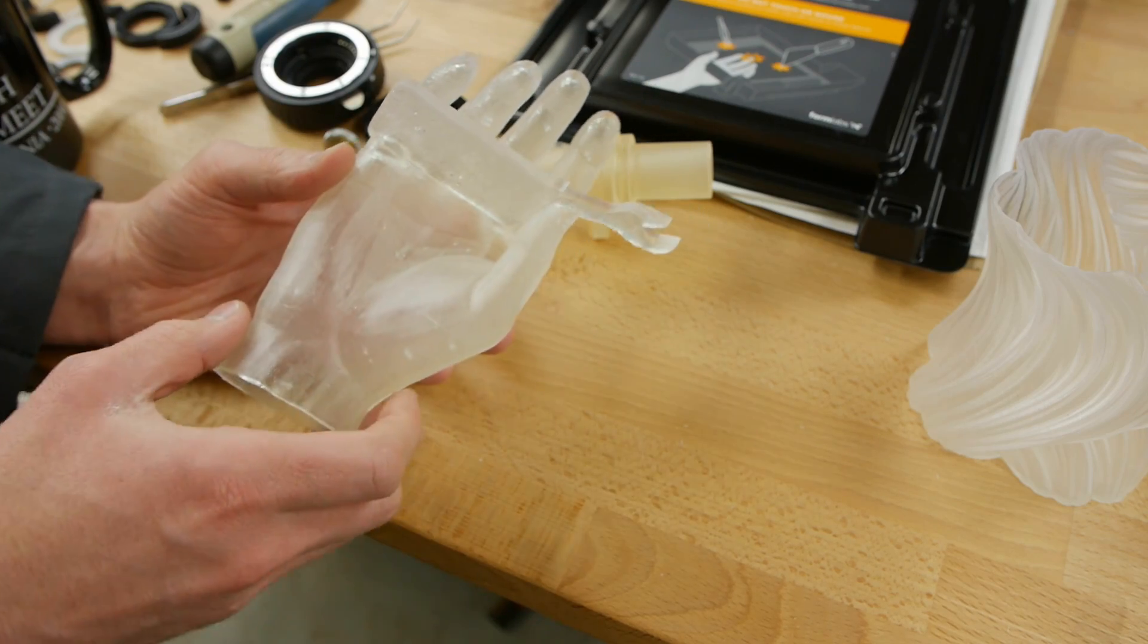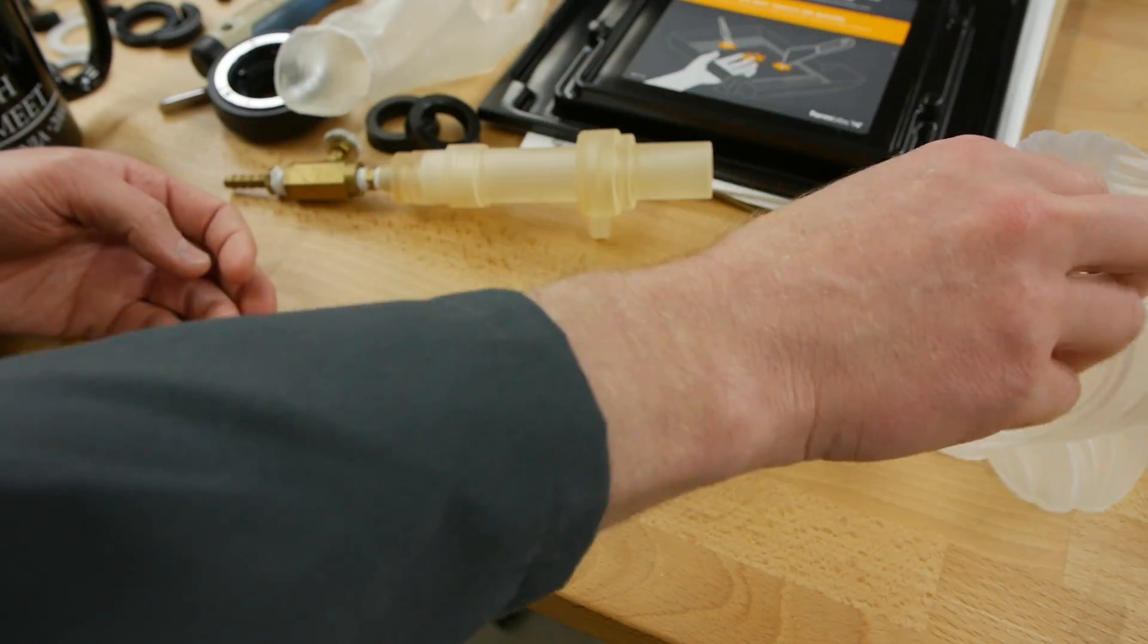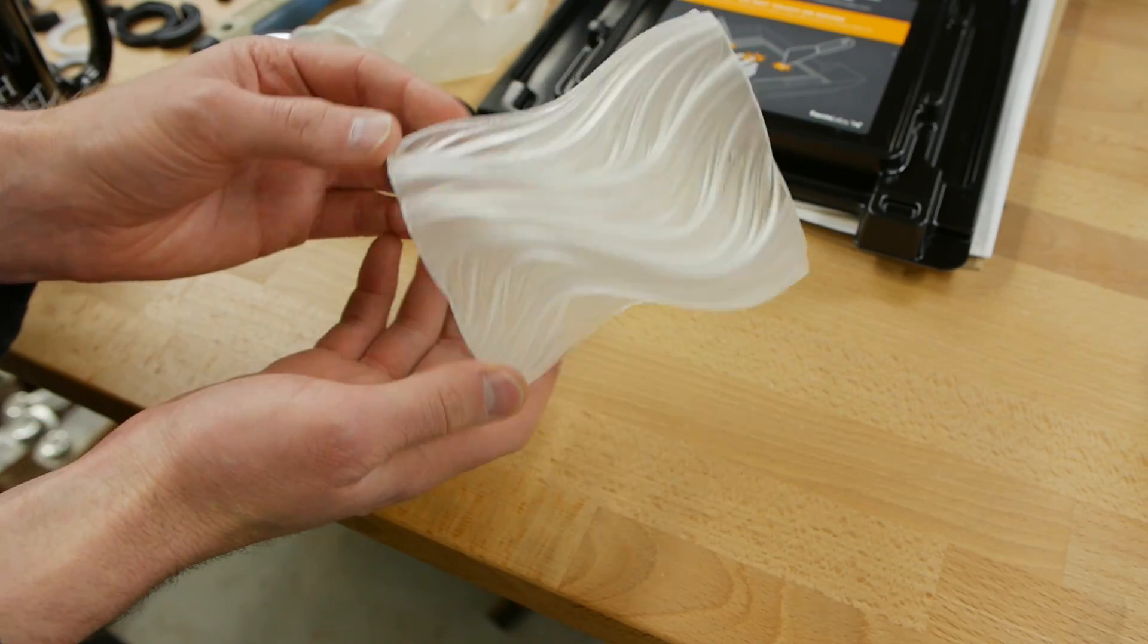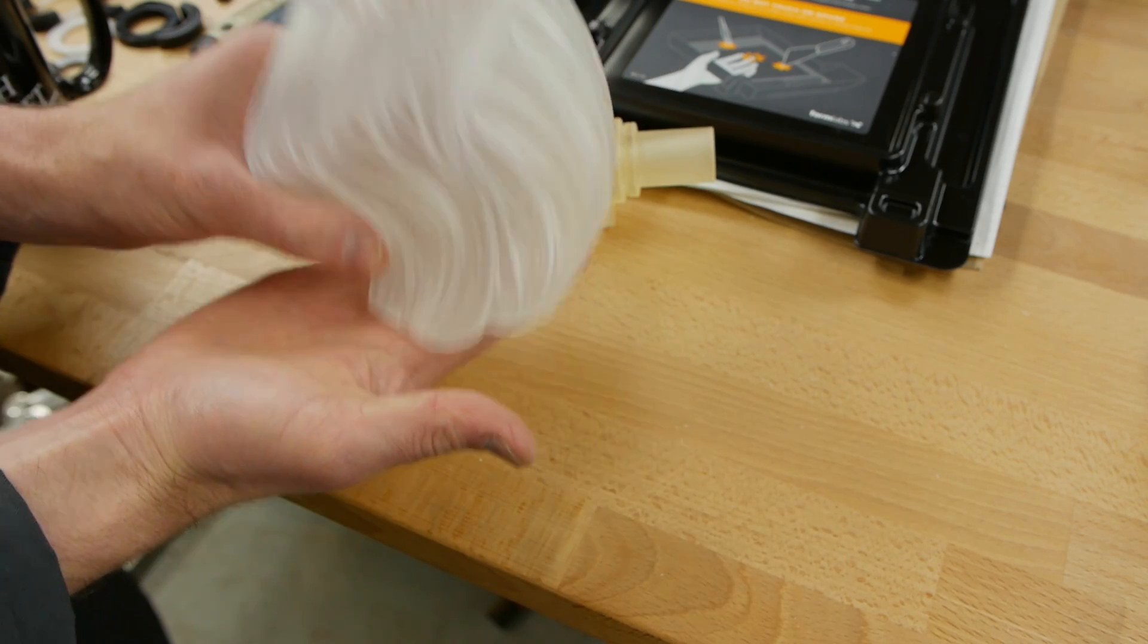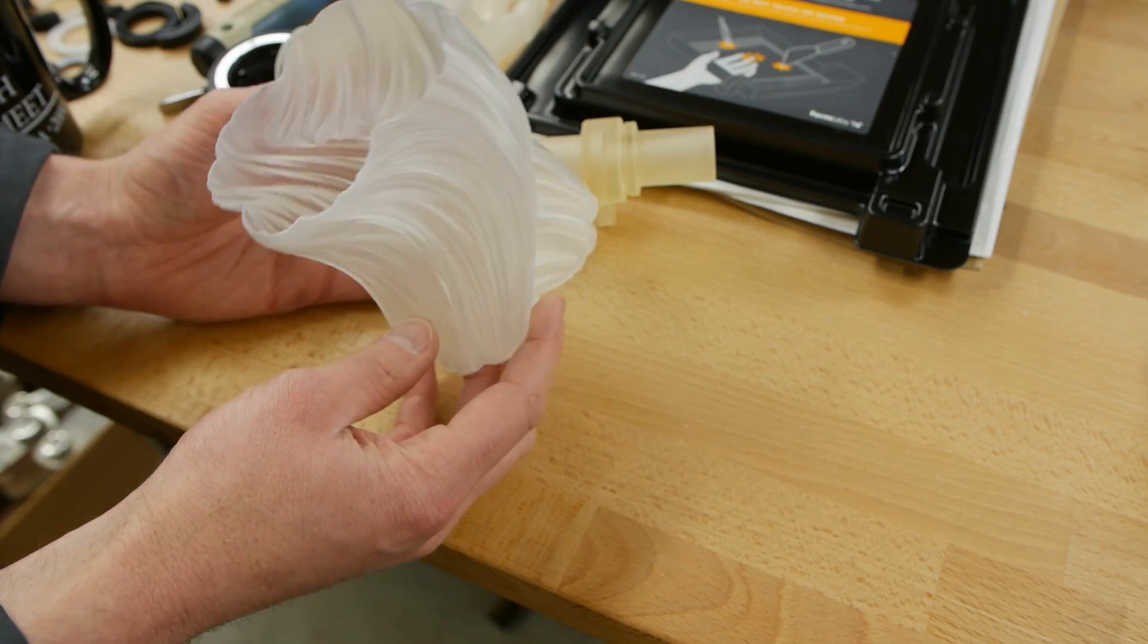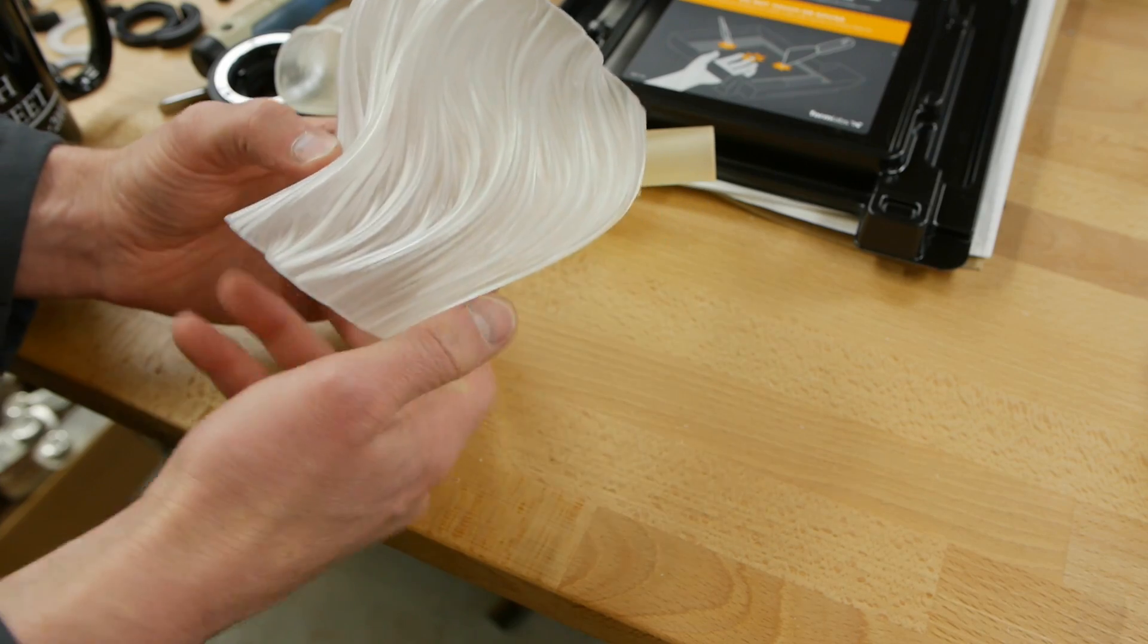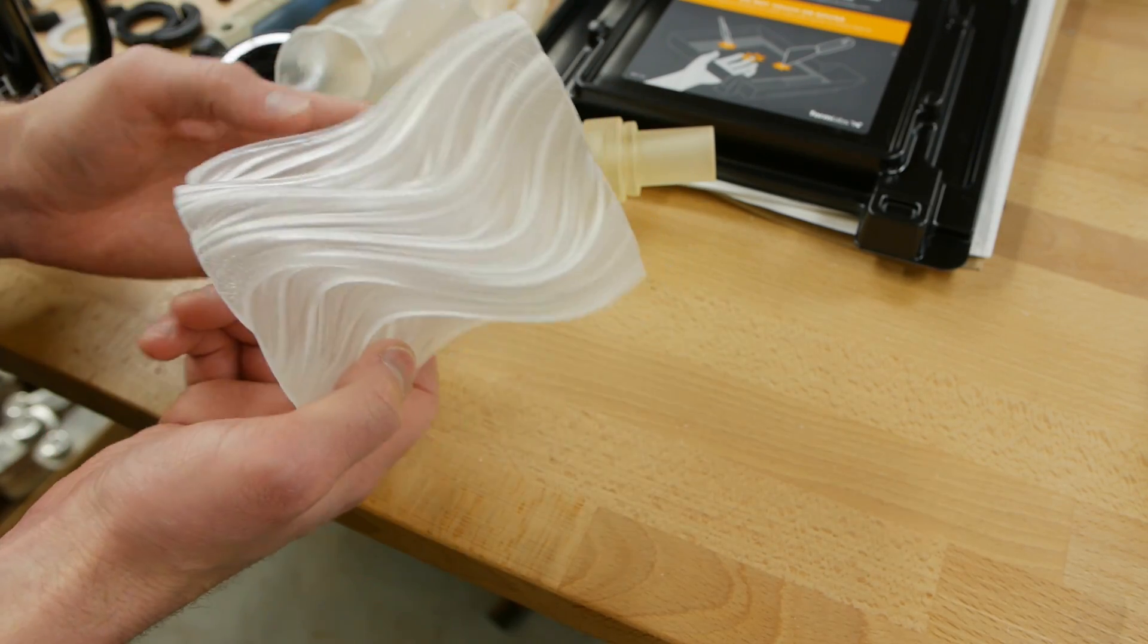However if you get more confident with how the system works you can print directly on the platter of the machine and not use supports. So this object didn't really need supports. I printed this so that this was flat on the base of the machine and it pulled it out of the resin tank and there isn't a single support on here. So thankfully the software allows you to do things that are not recommended and you can kind of decide for yourself what the sort of risk return ratio is.